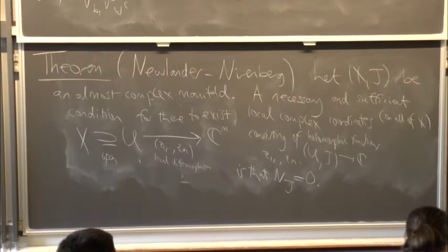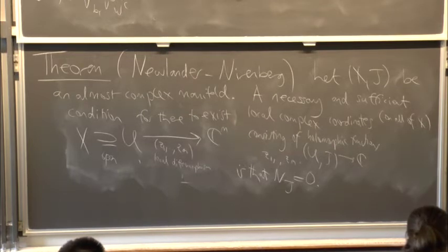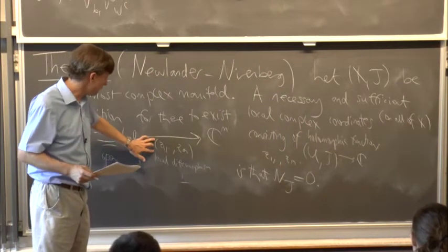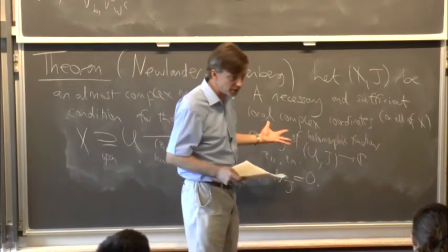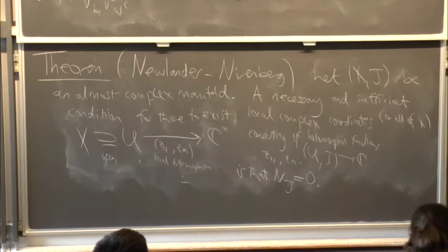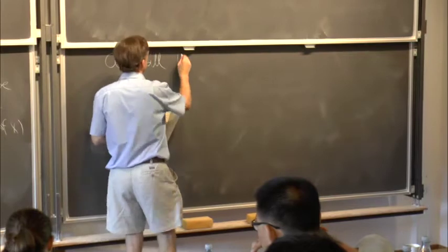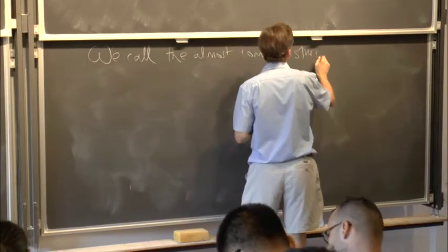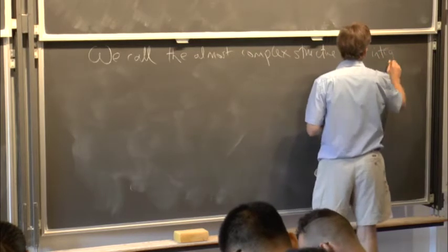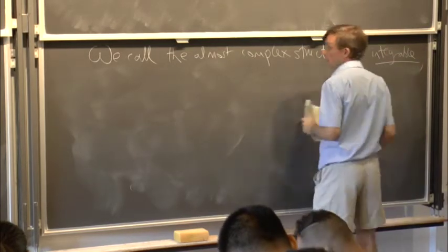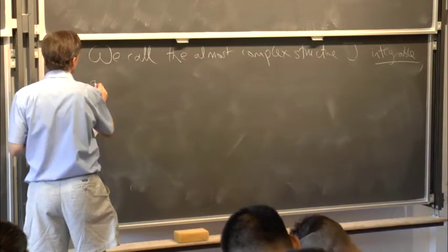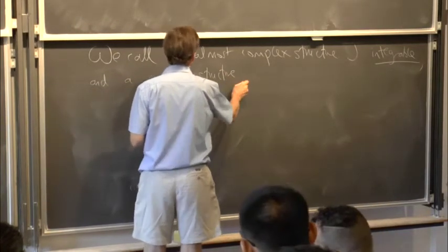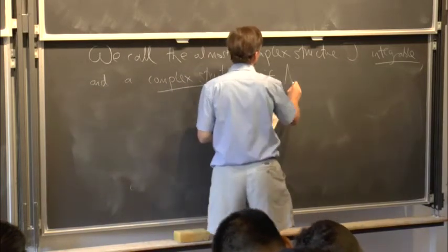If we take two different coordinate systems which are holomorphic in that sense, then the transition functions between them are automatically holomorphic. We call the almost complex structure J integrable — or an integrable almost complex structure, or simply a complex structure — if the Nijenhuis tensor N_J is zero.